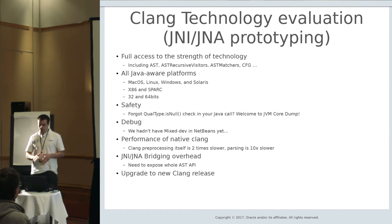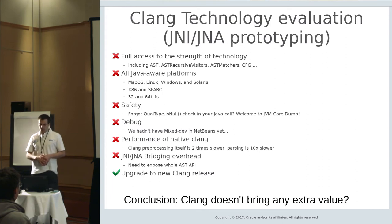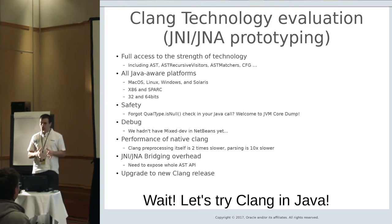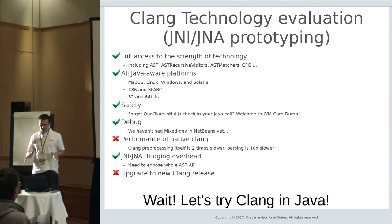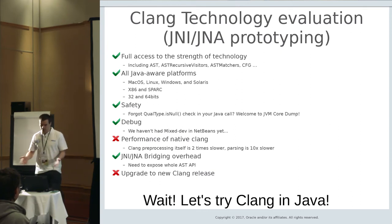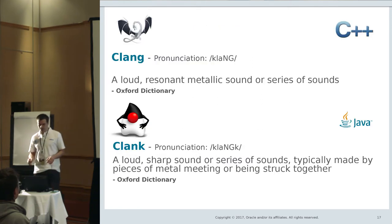The last important thing is ability to upgrade to a new Clang release — that wasn't an issue because you can just use the new library. But the conclusion was that we cannot use Clang as-is because it doesn't provide us any extra value. However, if you imagine the whole technology available in Java, most of the problems are gone. The only remaining issue is performance, since it's highly unlikely that a Java version will be as fast as native Clang, and we introduced the upgrade problem because now we can't just replace the library.